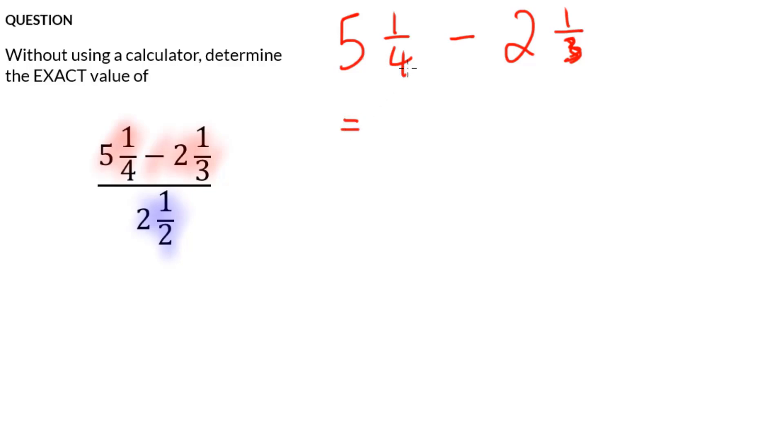So five times four is 20 plus one. That would be 21 over four. Two times three is six and six plus one is seven. So that would be seven over three.